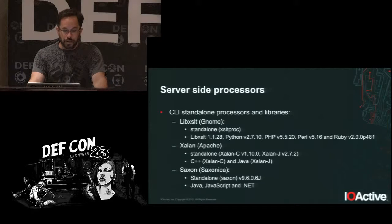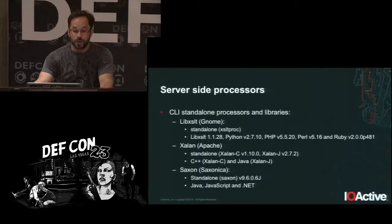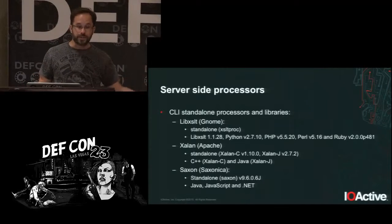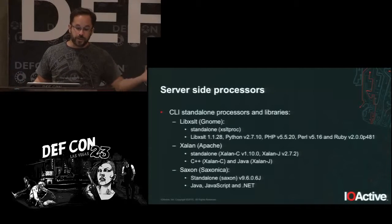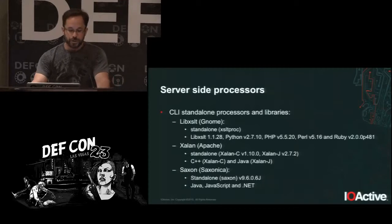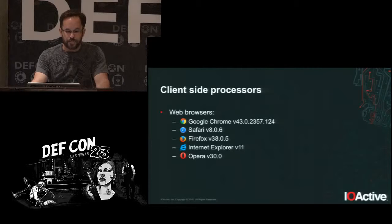The main processors and libraries are developed by Nomi, Apache, and Saxonica. LibXSLT is the most widely deployed — used by both server-side and client-side processors including web browsers. Xalan comes in C++ and Java flavors, and similarly for Saxon. I tested the latest available versions of all server-side libraries and web browsers.